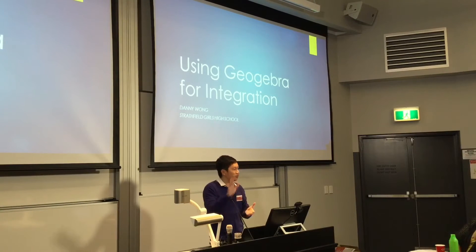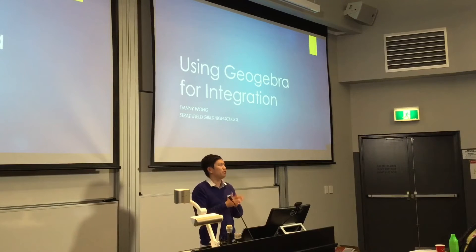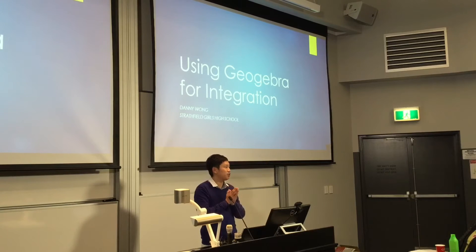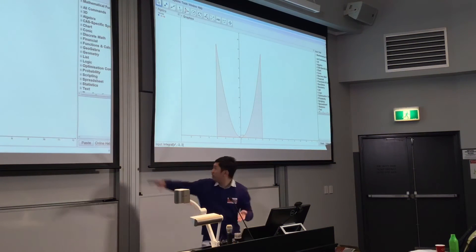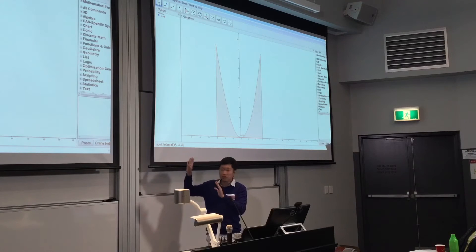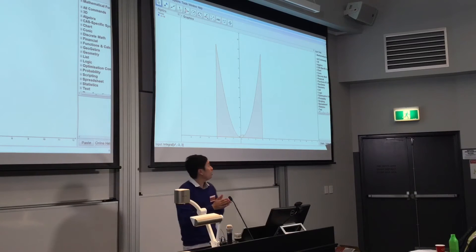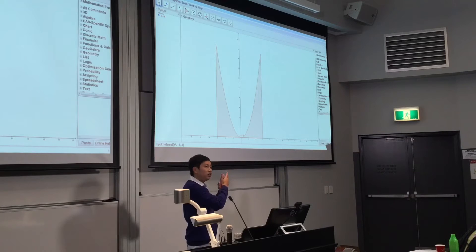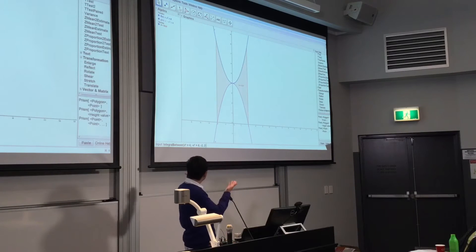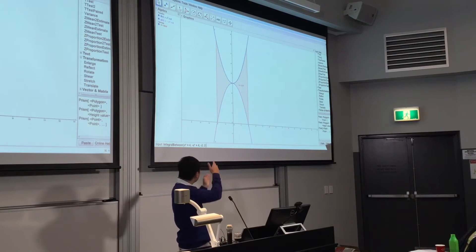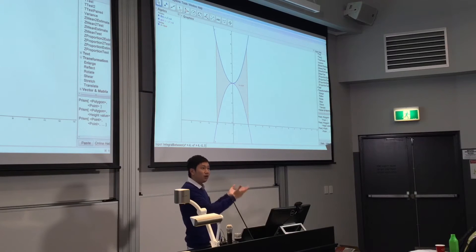Most of you really know that you're using GeoGebra for pretty much graphing lines, curves, etc. But there's a lot of functions in it that you may not know. So let's find the area under the curve or area between two curves — that's part of integration, right? You can have something like integral of x squared between minus 3 and 3, and show it to your class, get them to do it themselves to check their answers. And there's another one: integral between x squared plus 4 and another function between two values. You can show that as well.